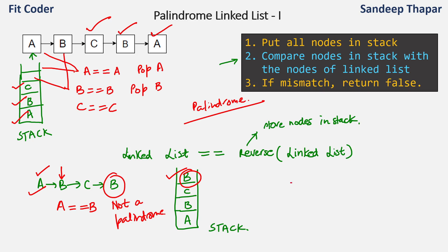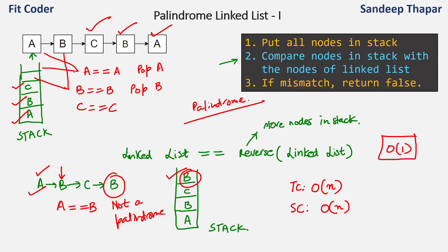The time complexity of this method is O(n) and the space complexity is also O(n) because we are using a stack to store the nodes. This method was straightforward since it derives from the definition of palindrome — the word should equal its reverse, and we use a stack to store that reverse. But the interviewer follow-up will often be: can we solve this in O(1) space — without using any extra space?